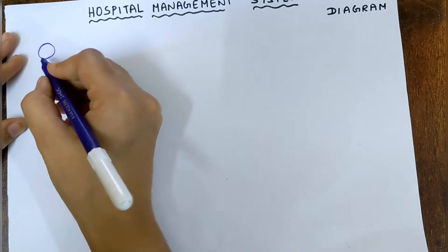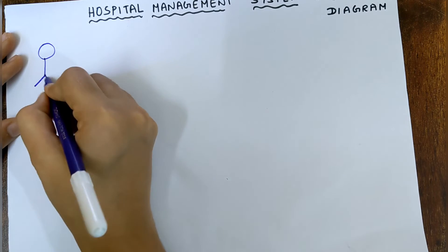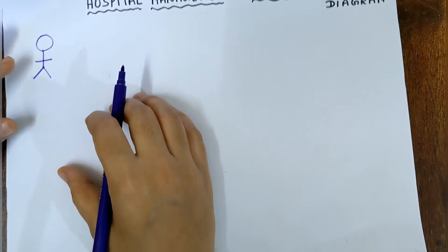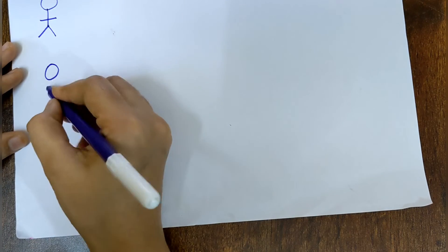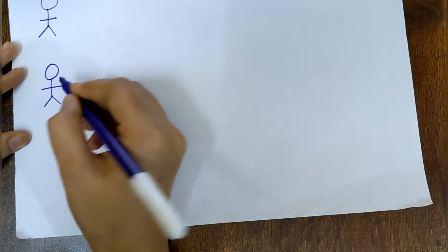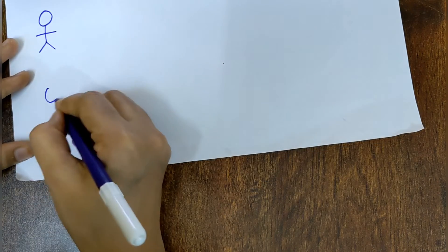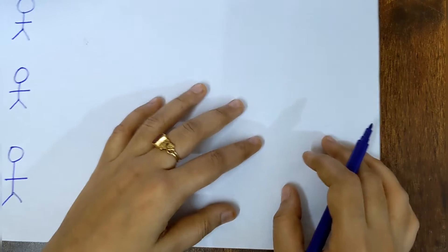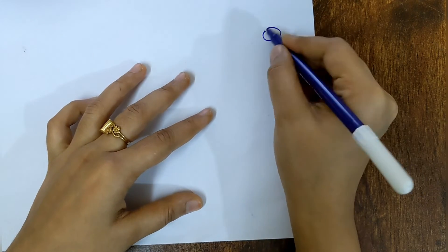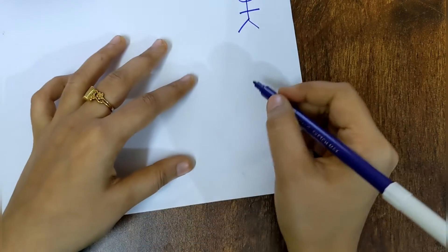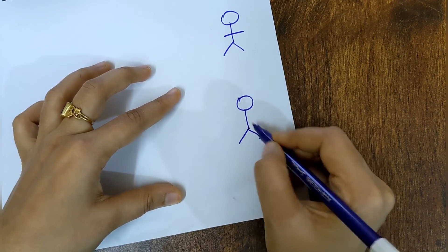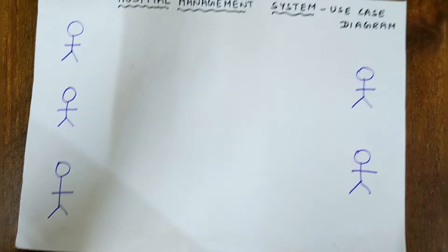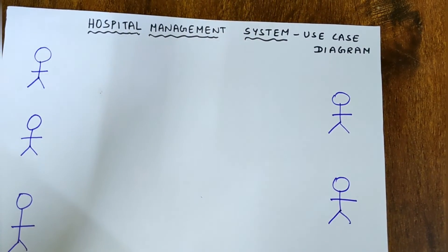We will draw an actor like this. In this diagram, I am going to use five actors. So this is actor 1, actor 2, actor 3, actor 4, and finally actor 5. Totally, I have drawn five actors in this diagram.